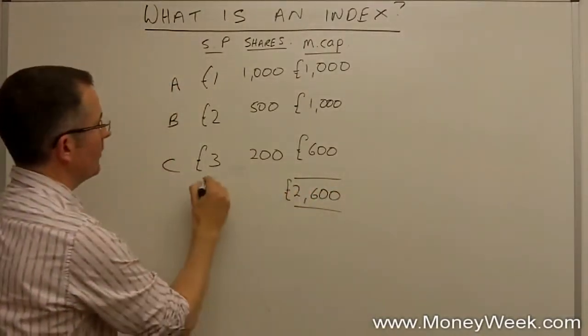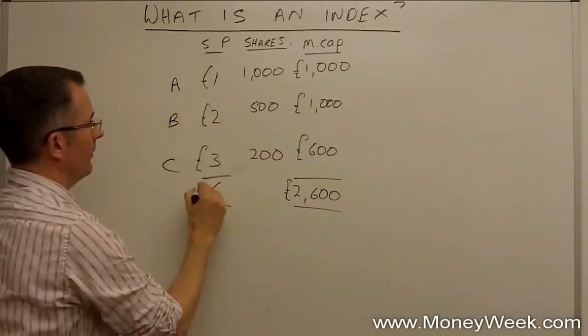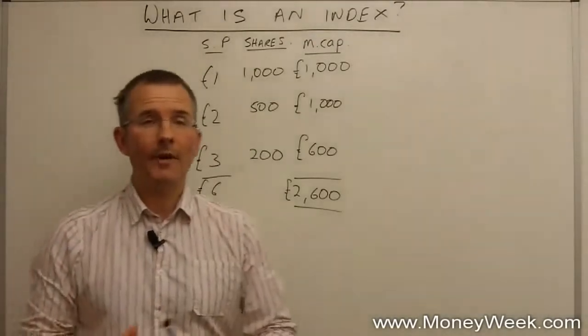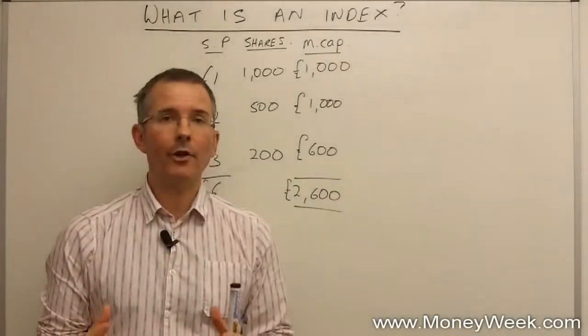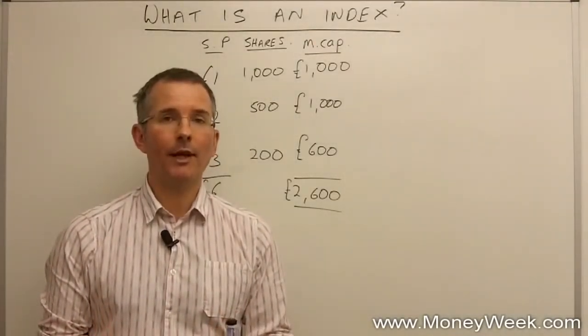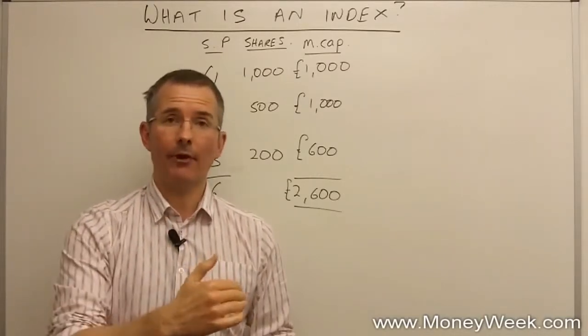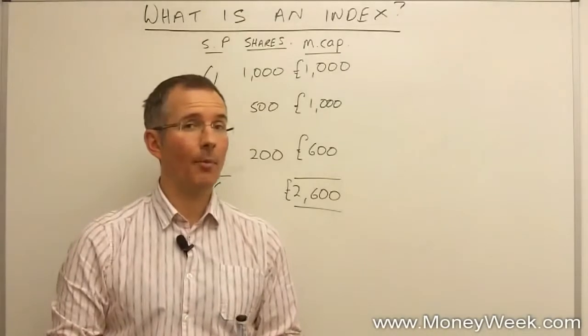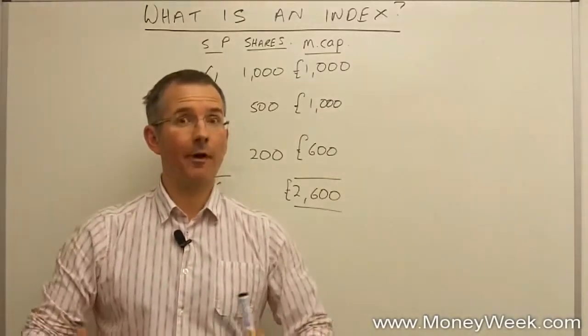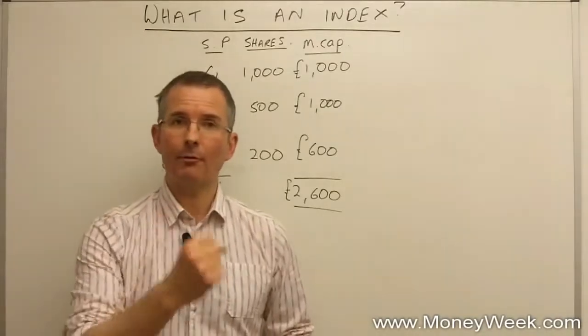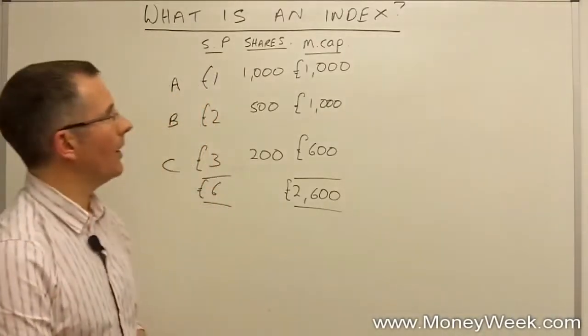So far, so what? Well, we're aiming to put something together, an index that captures the performance of these three companies in one number. That's what indices do. It's just three companies here, so you might say an index is a little bit over the top. Imagine if you're doing 100 or 500 in the case of the S&P 500. Obviously, the snapshot becomes more useful. So, how would that work?